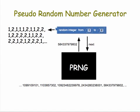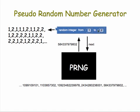Going back to our random integer function or block from App Inventor, here's how things work. Whenever you say give me a random number — that random integer between 1 and 2 — the App Inventor block will call on the PRNG to give it the next number. The PRNG is generating a huge long sequence of very big numbers. App Inventor's block takes them and, depending on what you tell it, performs its own mod operation on this number to generate a number like 1 or 2.